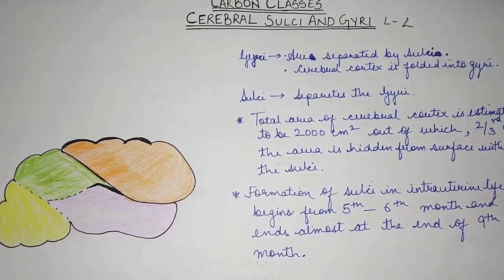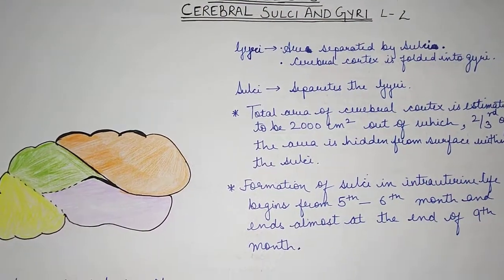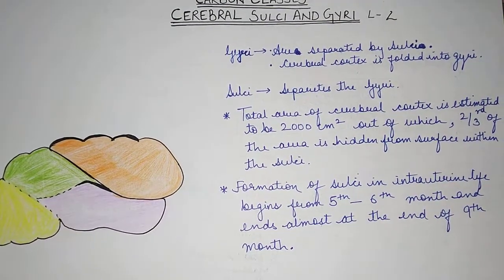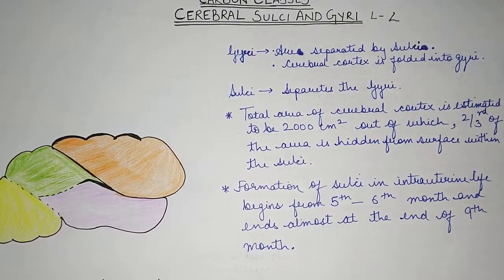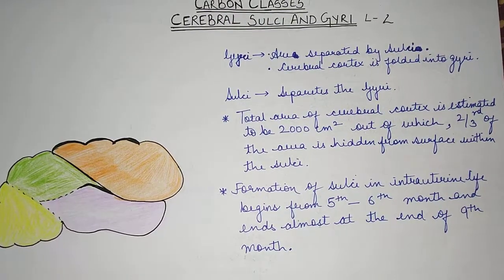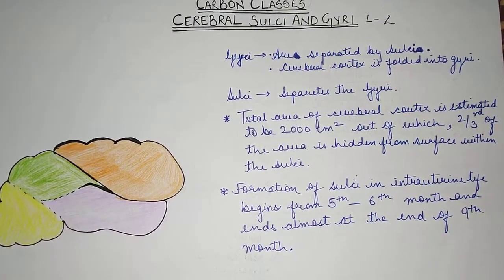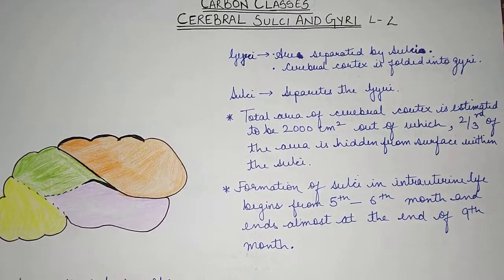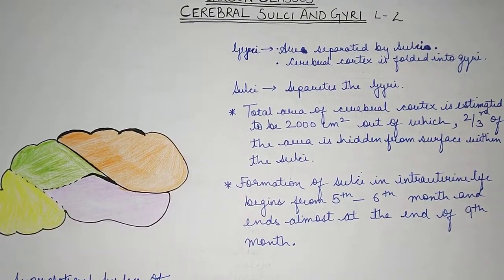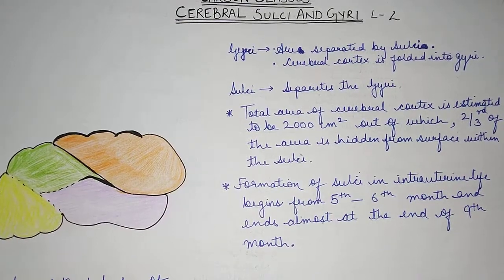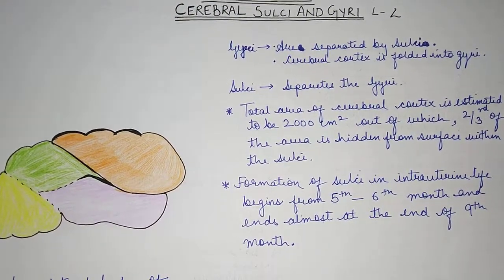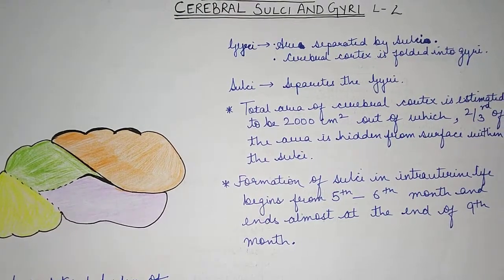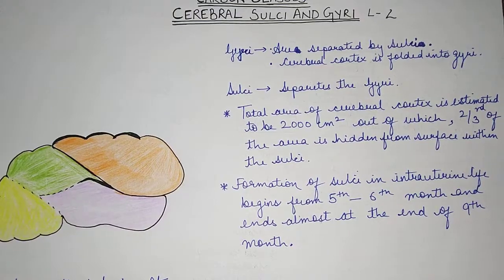Let's begin with today's lecture dealing with cerebral sulci and gyri. Your cerebral cortex is folded into folds which are called gyri, and gyri are separated by sulci. The basic definition is: gyri are folds of the cerebral cortex, and sulci are the structures that separate the gyri. You will understand more about them as we explain each one.